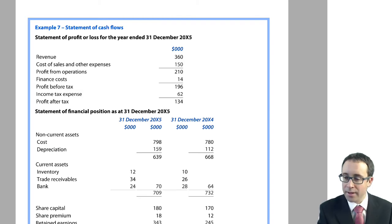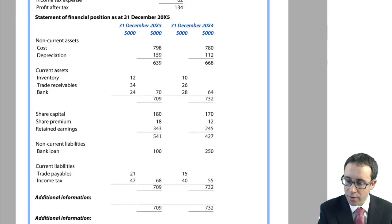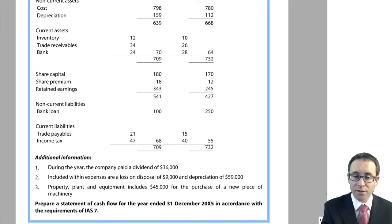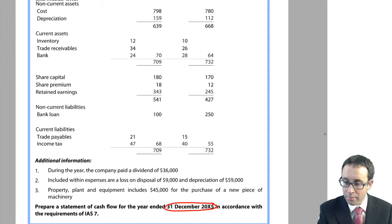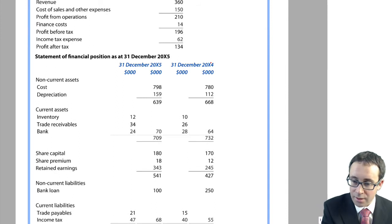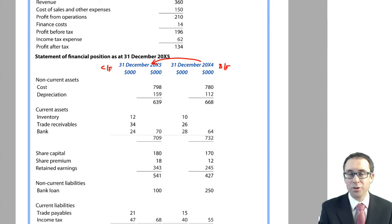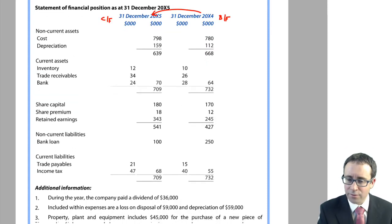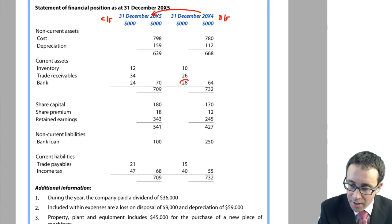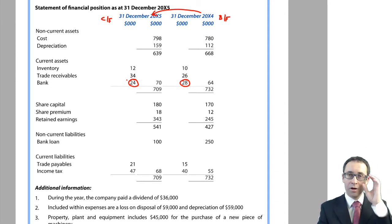So the question wants us to prepare a statement of cash flows for a December year end. When looking at the movement in the balances, we're going from X4 to X5, so X4 is your opening figures and X5 is your closing figures. When we're looking at the cash flow statement, we need to look at the movement in cash. You can see that we have an opening cash balance of 28 and a closing cash balance of 24.